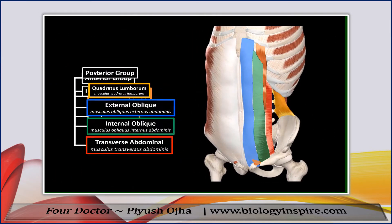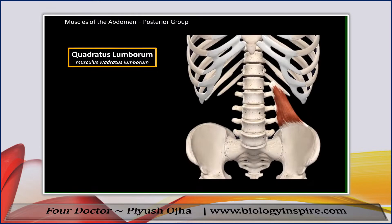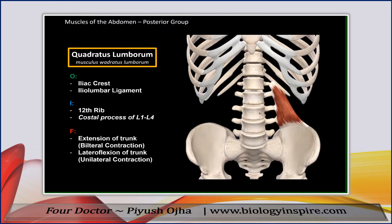Now let's start with the posterior group. The quadratus lumborum is situated on the posterior abdominal wall. It originates from the iliac crest and the iliolumbar ligament, and it inserts at the twelfth rib as well as the costal process of L1 to L4. Its function is extension of the trunk during bilateral contraction, or lateral flexion of the trunk if only one side contracts.